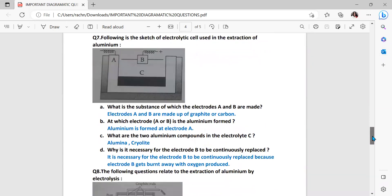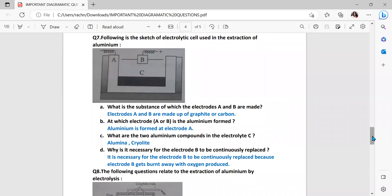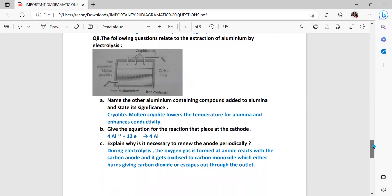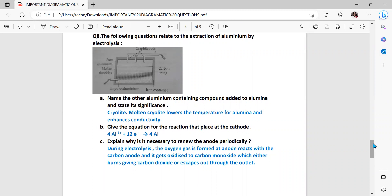Question number seven. Following is the sketch of electrolytic cell used in the extraction of aluminum. What is the substance of which the electrodes A and B are made? It is your carbon graphite. At which electrode A or B aluminum will be formed? Aluminum is a metal, its ion will be positive in nature, so obviously it will go to the negative electrode and your negative electrode you can see here the sign, it is A. What are the two aluminum compounds in the electrolyte C? Alumina and cryolite. Why is it necessary for the electrode B to be continuously replaced? It is necessary for the electrode B to be continuously replaced because electrode B gets burnt away with oxygen produced. Question eight, the following questions are related to the extraction of aluminum by electrolysis. Name the other aluminum containing compound added to alumina and state its significance. It is your cryolite because your molten cryolite lowers the fusion temperature for alumina about 2100 degree centigrade decreases to 950 degree centigrade and enhances the conductivity.